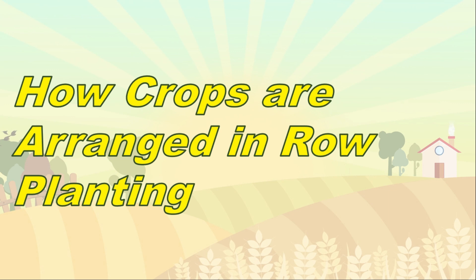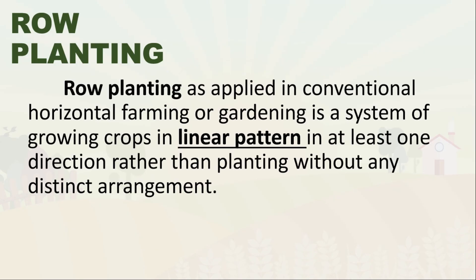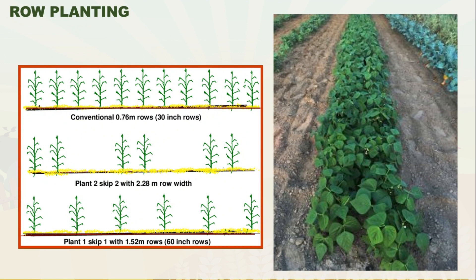So how are crops arranged in row planting? Row planting, as applied in conventional horizontal farming or gardening, is a system of growing crops in a linear pattern in at least one direction, rather than planting without any distinct arrangement. When we say row planting, the crops are planted in a linear pattern. We can use this method by planting two and skipping two crops, or planting one and skipping one with six-inch distance between plants.